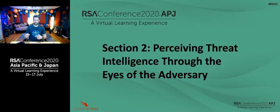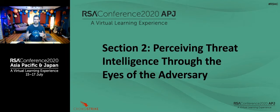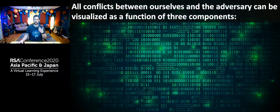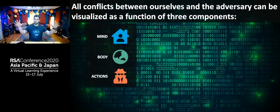Per the title of the brief, we're going to focus on how you really perceive threat intelligence through the eyes of the adversary. The ability to see what the other side sees — to see through the eyes of the enemy — is what allows us to truly excel. Let's imagine that all conflict between ourselves and the adversary can be visualized as a function of three components. When I say all conflict, I mean literally all conflict, not just cyber conflict, but any conflict. Those elements are mind, body, and actions.